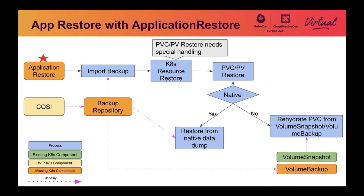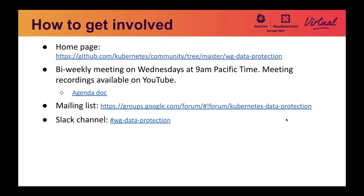These are all the missing building blocks that we have identified and are working on. This working group is working on identifying missing functionalities in supporting data protection in Kubernetes and figuring out how to fill those gaps. We are also working on a white paper on data protection workflow. We have bi-weekly meetings on Wednesdays — if you are interested, please join our meetings. We also have a mailing list and a Slack channel. This is the end of the session. Thank you all for attending. If you have any questions, please don't hesitate to reach out to us.